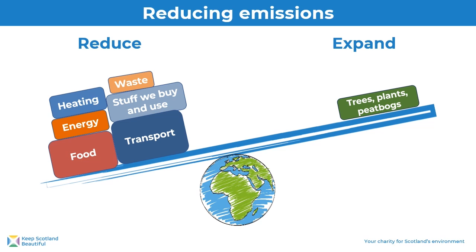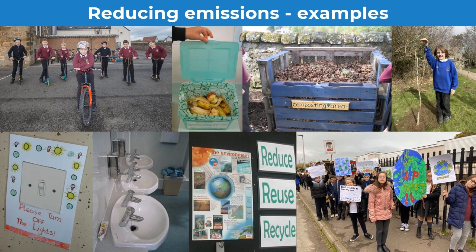We can also work on expanding the absorption of greenhouse gases by trees, peat bogs and underwater forests. Here are some examples of what you can do to reduce greenhouse gas emissions and help expand greenhouse gas absorption in your school. You could help increase active travel and the use of public transport rather than using cars. You could reduce energy waste by turning lights off and reduce heating and hot water waste. You could only use what you need and reduce waste through reduce, reuse, recycle. You could reduce food waste and ensure any food you do have to throw away is composted.